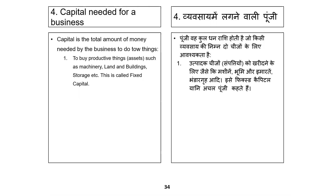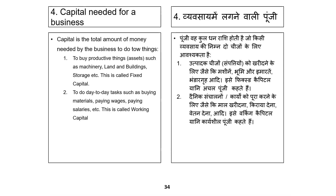So one kind of punji is fixed capital. The other kind of punji is what you use for day-to-day operations — such as buying food, buying stock for your shop, or paying the people who are working with you. For all the things you pay for on a daily basis, we call this working capital, or career shield punji.